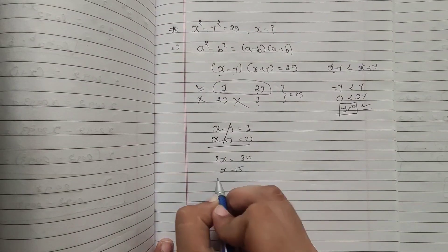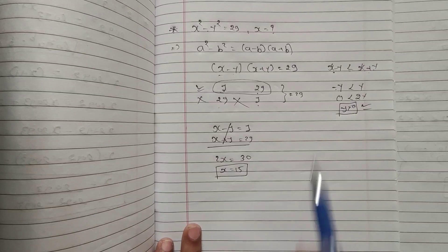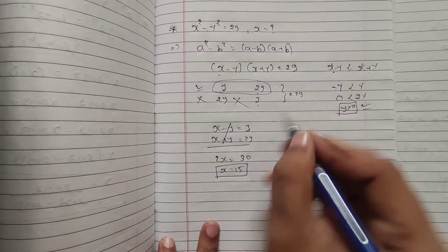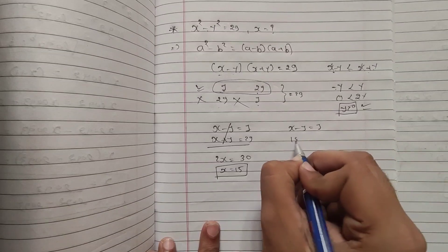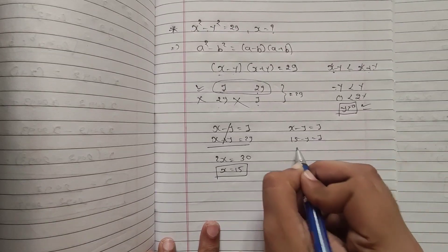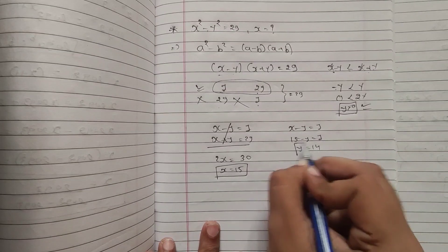So x will be 15. And this is our final answer. We have to find x. And if you want to find y, then it will become x minus y equal to 1, so 15 minus y equal to 1. So y equal to 14.